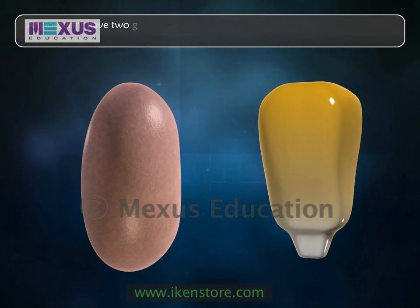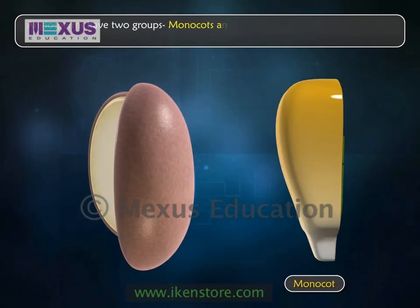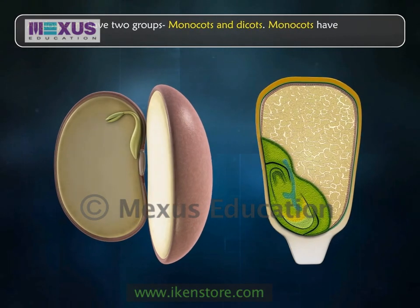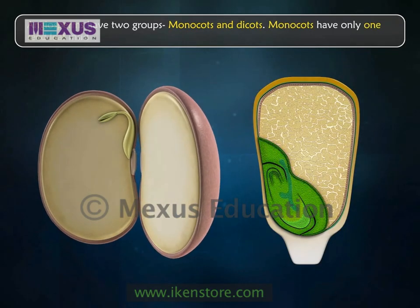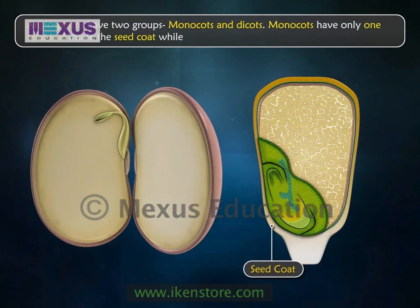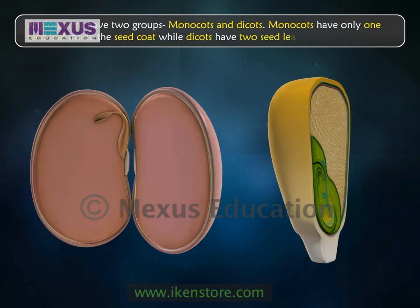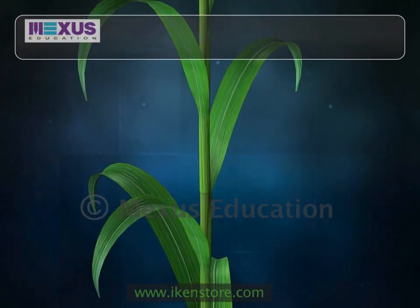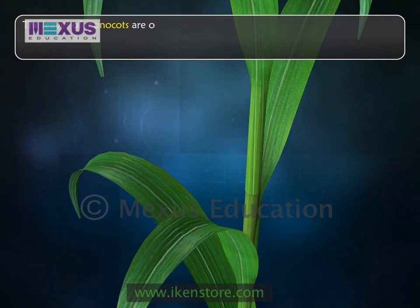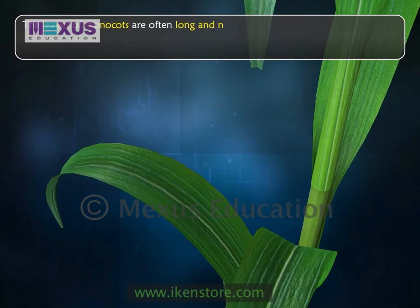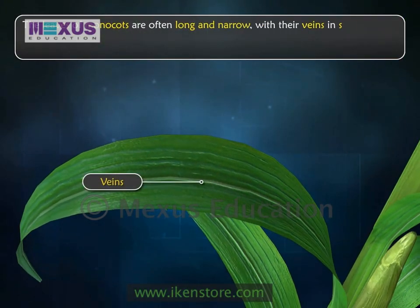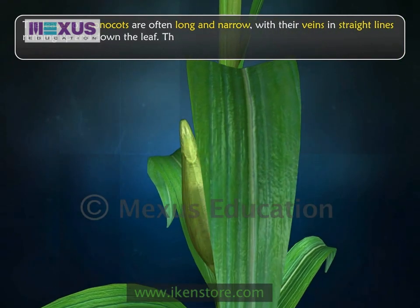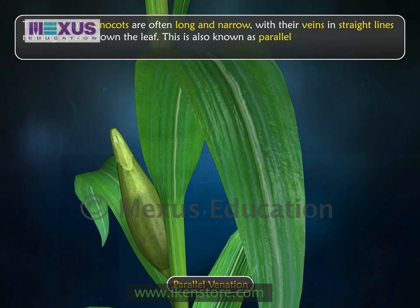Angiosperms have two groups: monocots and dicots. Monocots have only one seed leaf inside the seed coat, while dicots have two seed leaves inside the seed coat. The leaves of monocots are often long and narrow with their veins in straight lines running up and down the leaf. This is also known as parallel venation.